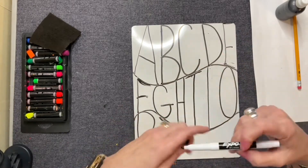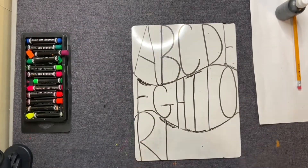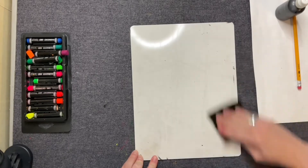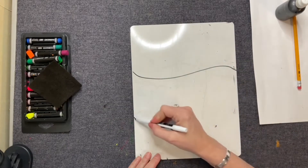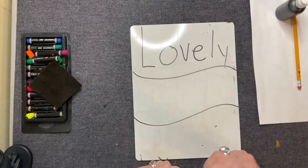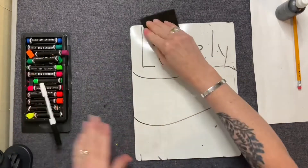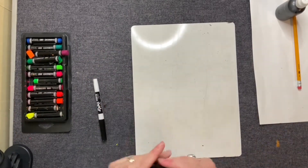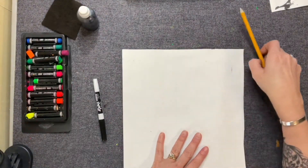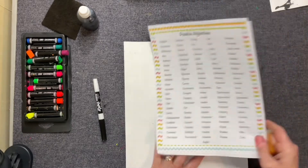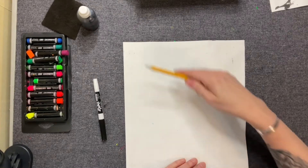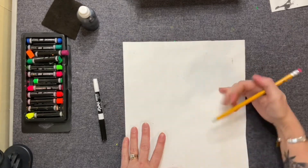Practice on this dry erase board, and once I've seen it and you know how to do it, you can go on to your white paper. I have seen some kids get a little confused — they'll do their slightly wavy lines and then write lowercase or unstretched letters, which is incorrect. You want capital letters stretched following that line. Once you're comfortable, get your white sheet of paper, put it long ways, and put your name on the back with your class code.